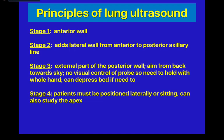Most lung exams can be broken down into stages. For pulmonary edema, you look at stage one — just the anterior wall. For pleural effusions, you look at the lateral walls in stage two. For pneumonias, atelectasis, and early pleural effusions, you look at stage three — the external part of the posterior wall. You aim from the back towards the sky, with no visual control of the probe, requiring both hands, and you may even need to depress the bed to get this view.